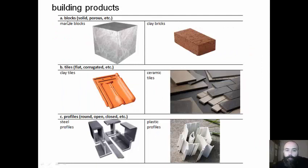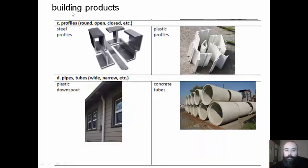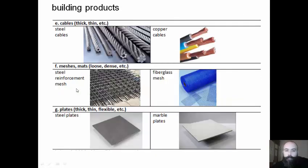Examples of building pieces include blocks, tiles, profiles, pipes, cables, meshes, and plates — made of different materials like metals, plastics, or clay.